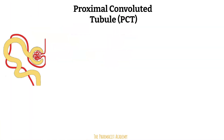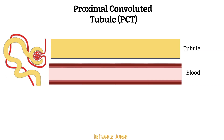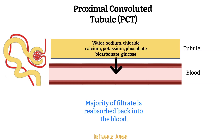First is the proximal convoluted tubule, also known as PCT. The name proximal simply refers to the fact that it's the closest to the Bowman's sac, and convoluted due to all the twists and turns. If we zoom in, we have the tubule and then the blood. The PCT is mainly known for being the part of the renal tubule where the majority of filtrate is reabsorbed back into the blood. This includes water, sodium, chloride, calcium, potassium, phosphate, bicarb, urea, as well as all the glucose and amino acids.